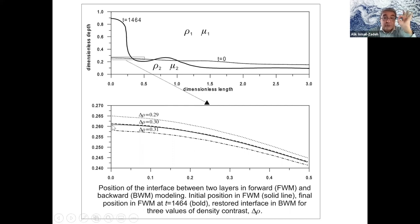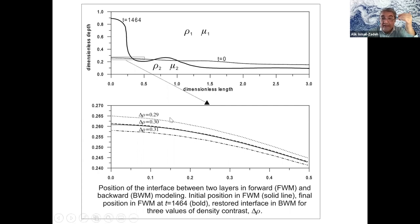Please note that density is something like 2000 kilograms per cubic meter. That's why the perturbation to density shown here is very small. Nevertheless, you can see that we have a very good performance of the algorithm.